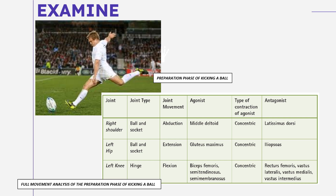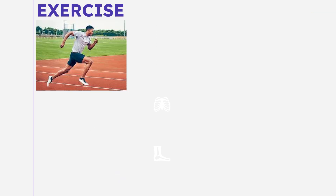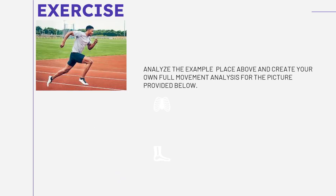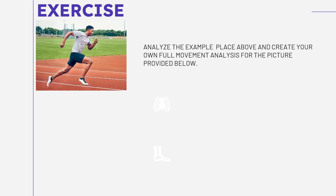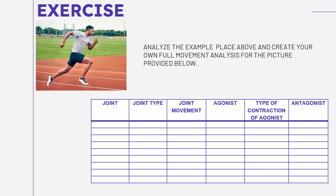In your exercise, you will have to create your own full movement analysis. You need to analyze a picture — the picture is of a running man. You will identify the joint involved, the joint type, the joint movement, the agonist, the type of contraction of the agonist, and the antagonist. All of that is provided in your module.